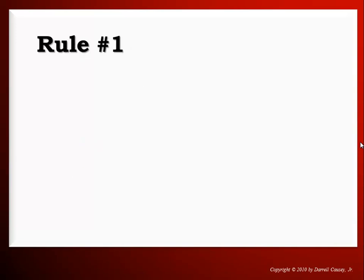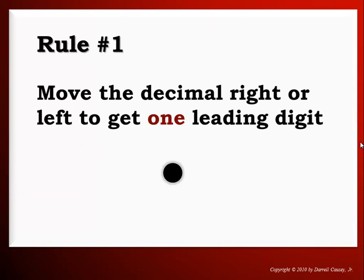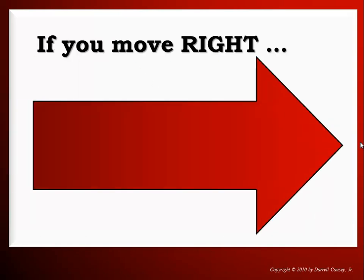Rule number one: move the decimal left or right to get one leading digit. I know you may be thinking, well, you said that several times. Of course I said it several times - it's very important. You need to get that idea. That's the goal in our scientific notation, to get it right. And then we can drop all of the zeros that aren't significant.